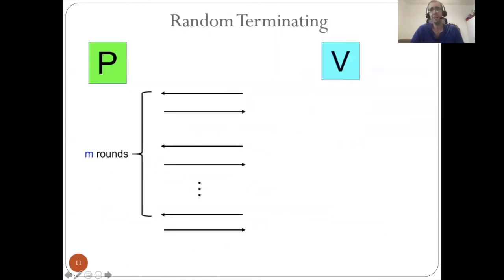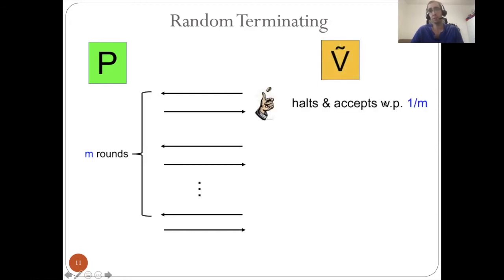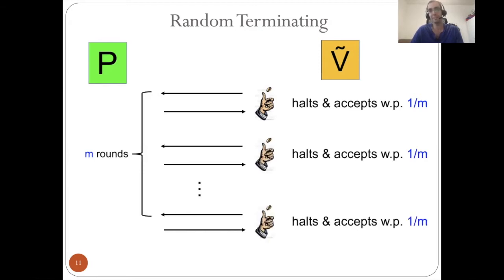What is the random terminating variant of an argument? Suppose we have an argument PV with M rounds. We slightly change the verifier such that in each interaction round, it flips a coin that is one with probability 1 over M. If the coin is one, it says to the prover: I accept, we don't need to continue the interaction. Otherwise, it continues to the next round, flipping the coin again and again until the end. If none of the coins were one, it acts like the original V and accepts if V does.